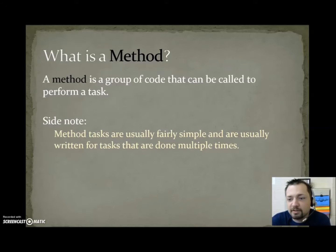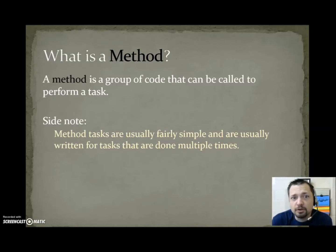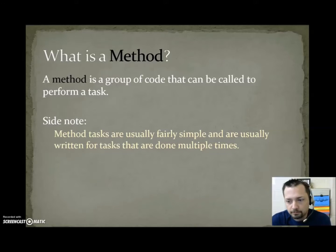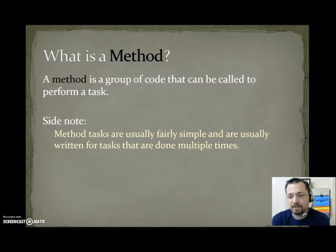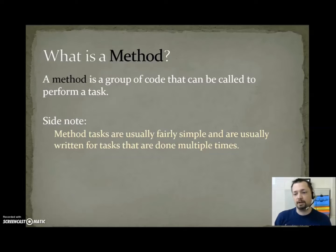As a side note, methods are usually fairly simple and are usually written for tasks that are done multiple times. If you need to do it a single time, usually you won't write a method for it unless it's going to make your code significantly more easy to read. We're going to violate that rule in our examples and in most of our beginning labs, just so you can learn the syntax of how a method is set up. So we're going to be writing methods for things that we'd normally just do as a line or a few lines of code.